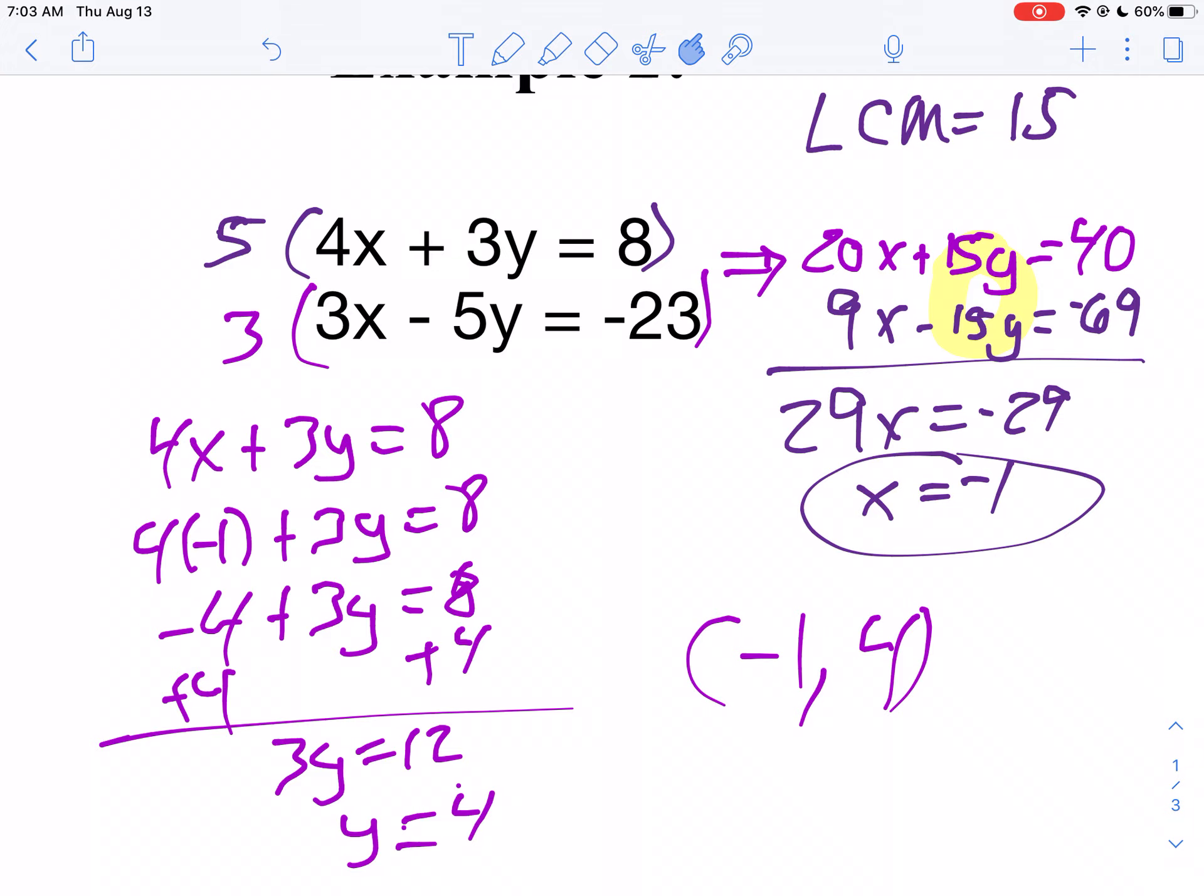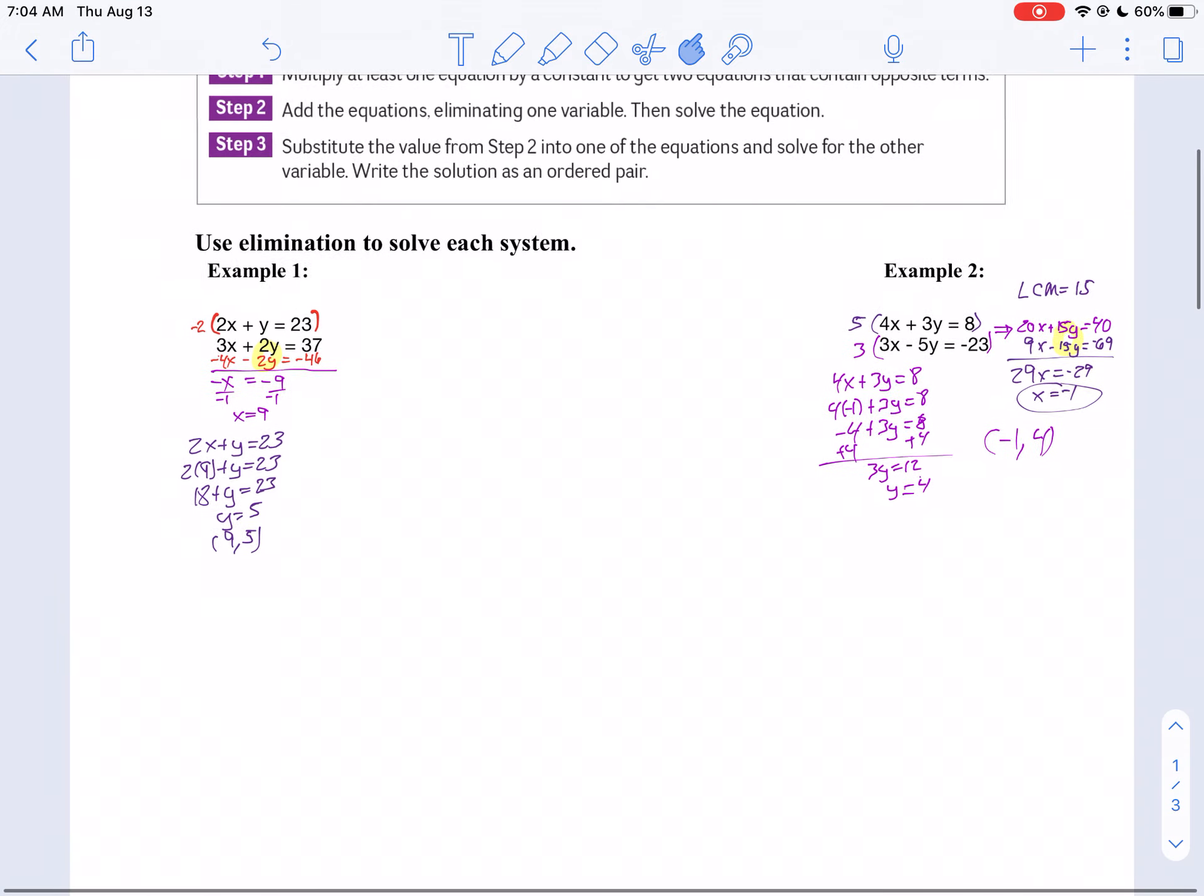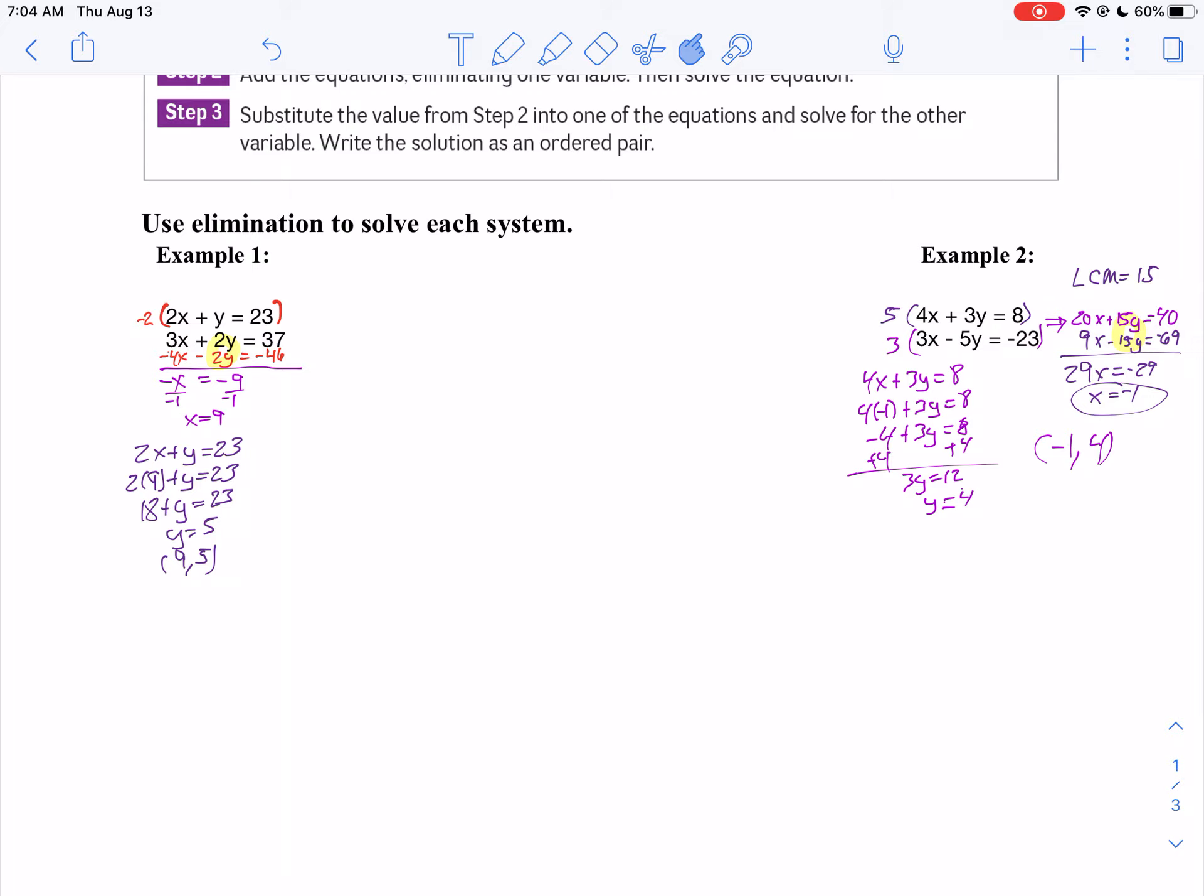So my answer is negative 1 and 4. This is an example where we multiply both equations by different numbers. The first example, we just multiplied one equation.